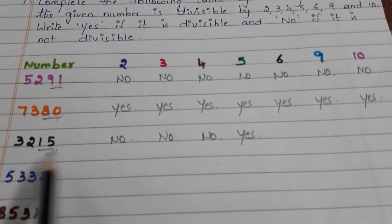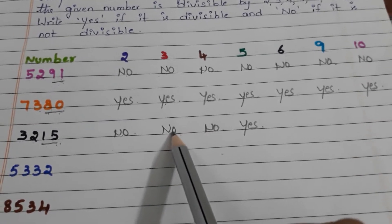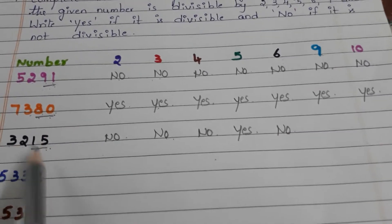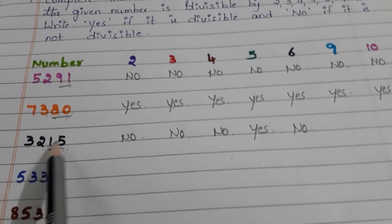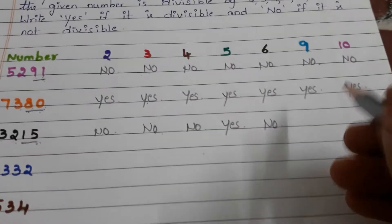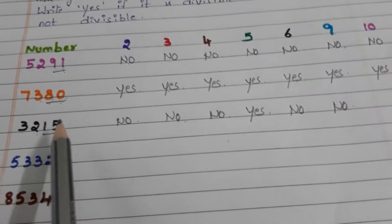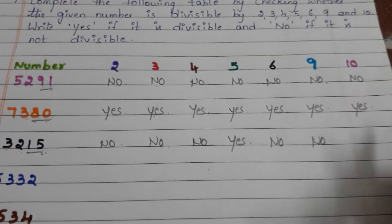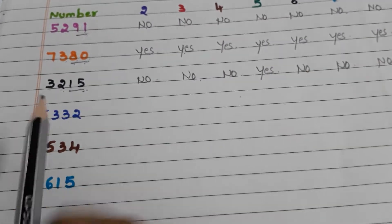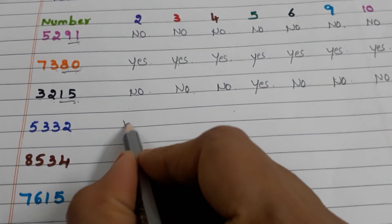What about 6? The number is not divisible by 2 and not divisible by 3, so it is automatically not divisible by 6 — write no. What about 9? 3 plus 2 is 5, 5 plus 1 is 6, 6 plus 5 is 11. 11 is not a multiple of 9, so this number is not divisible by 9 — write no. What about 10? In the units place 5 is there, but 0 should be there for divisibility by 10, so write no.